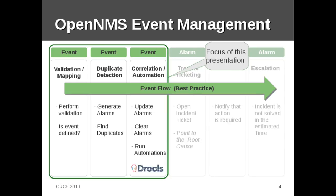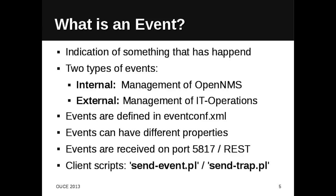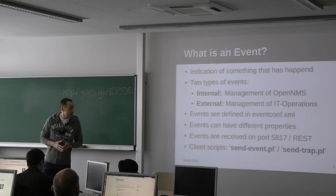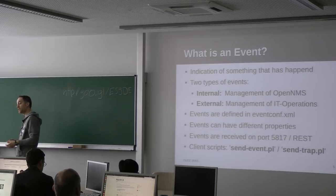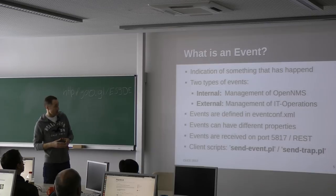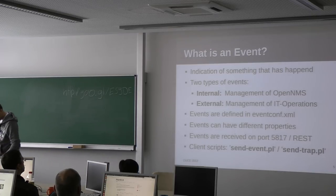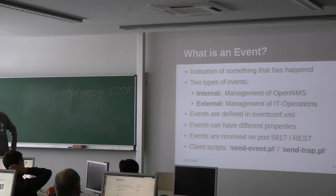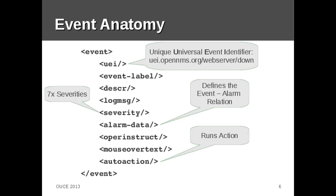This presentation focuses only on the first three categories. So we need to clarify: what's an event? Generally speaking, an event is an indication of something that has happened. We have two types of events in OpenNMS: internal events for managing OpenNMS, and external events for managing our IT operations. We have to define events in the event configuration files, and we can define different properties for sending custom information with an event. OpenNMS receives events on port 5817, or you can use a RESTful interface. Also, we have client scripts: send event PL and send SNMP trap PL.